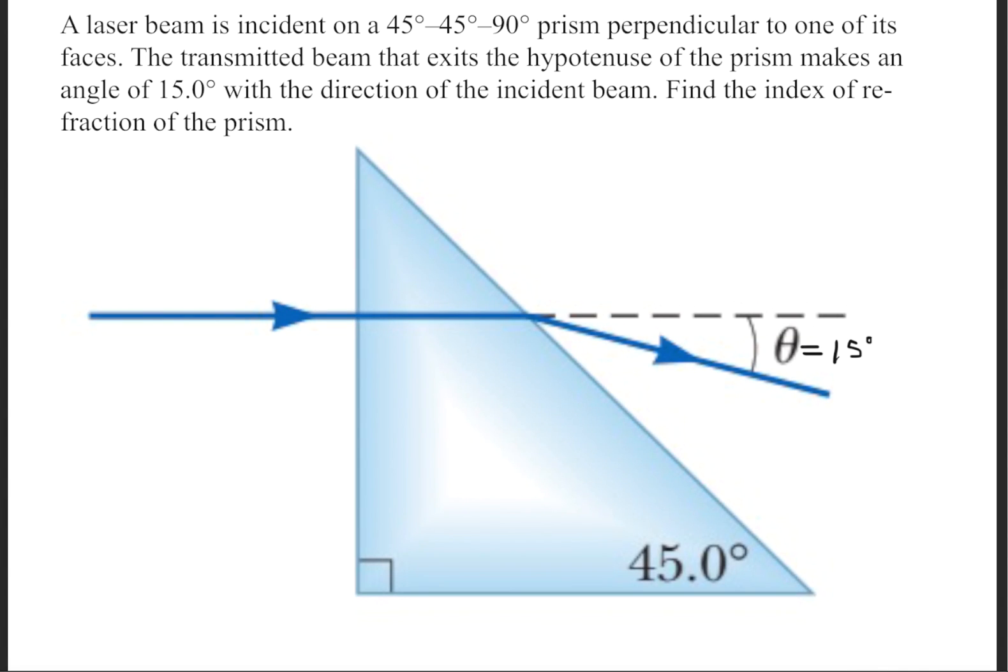We'll begin solving this question by first drawing the surface normal. Now the surface normal is a vector that is perpendicular to the surface, and the surface in this case will be our hypotenuse of this triangle.